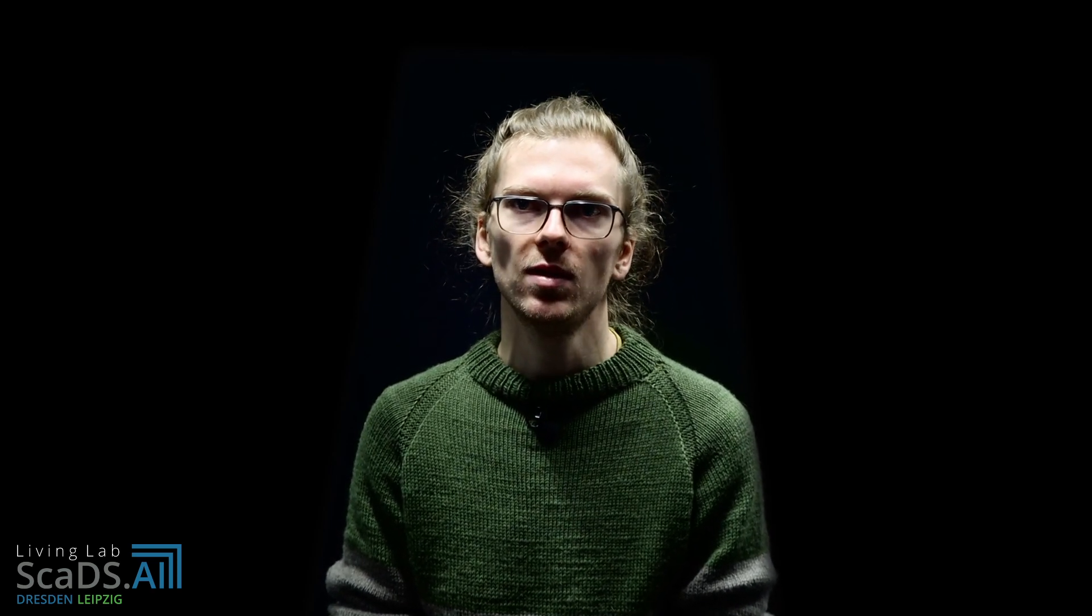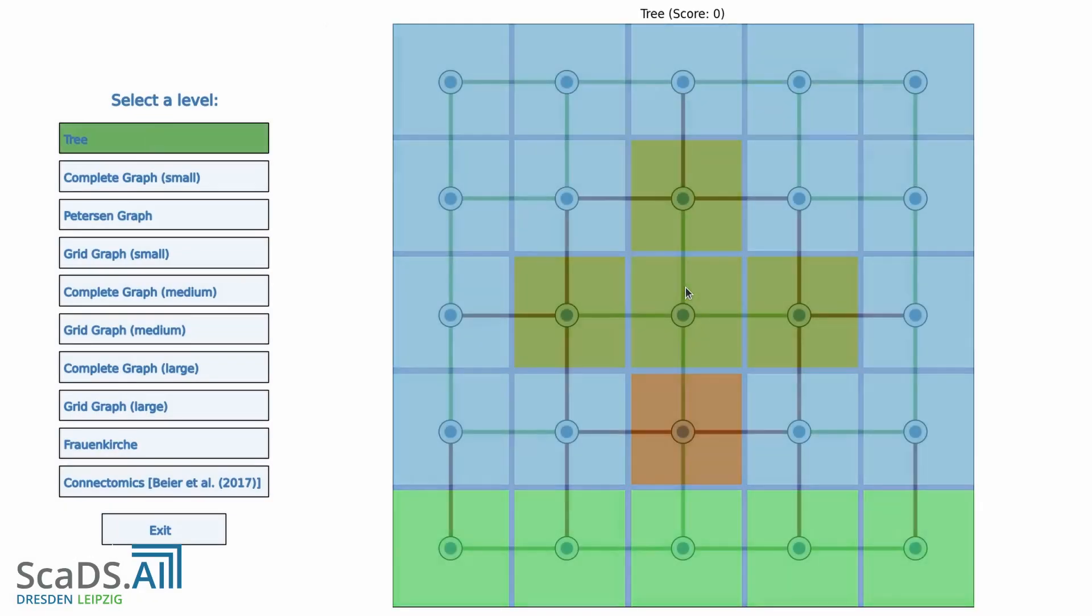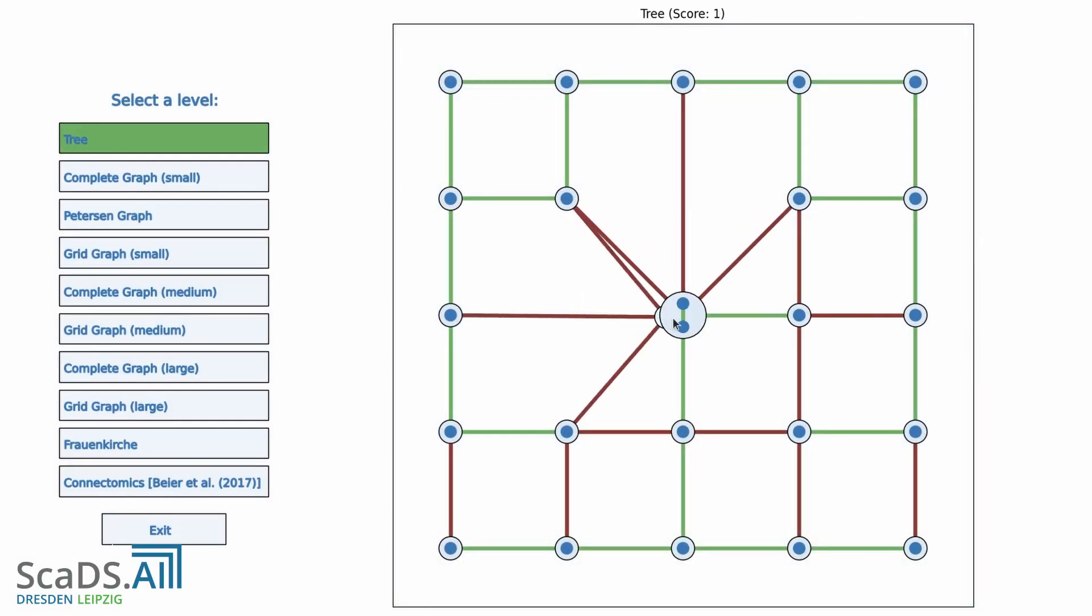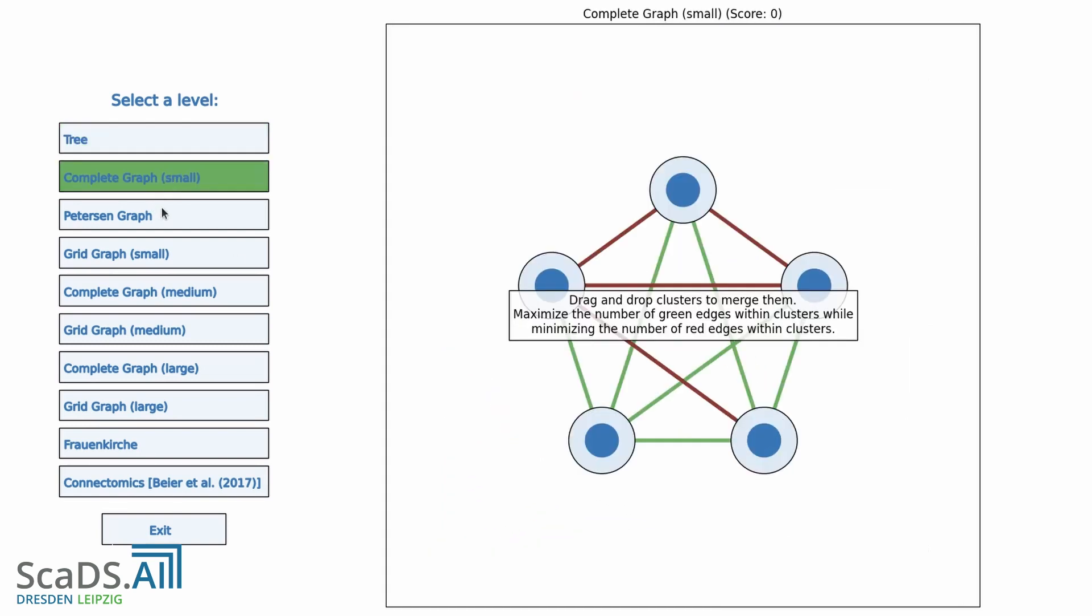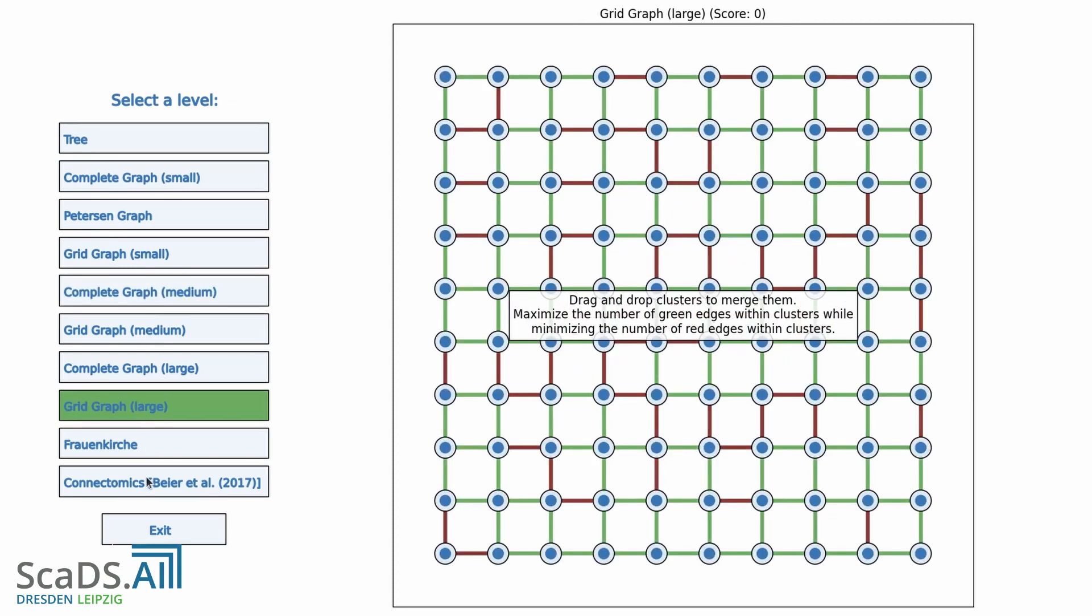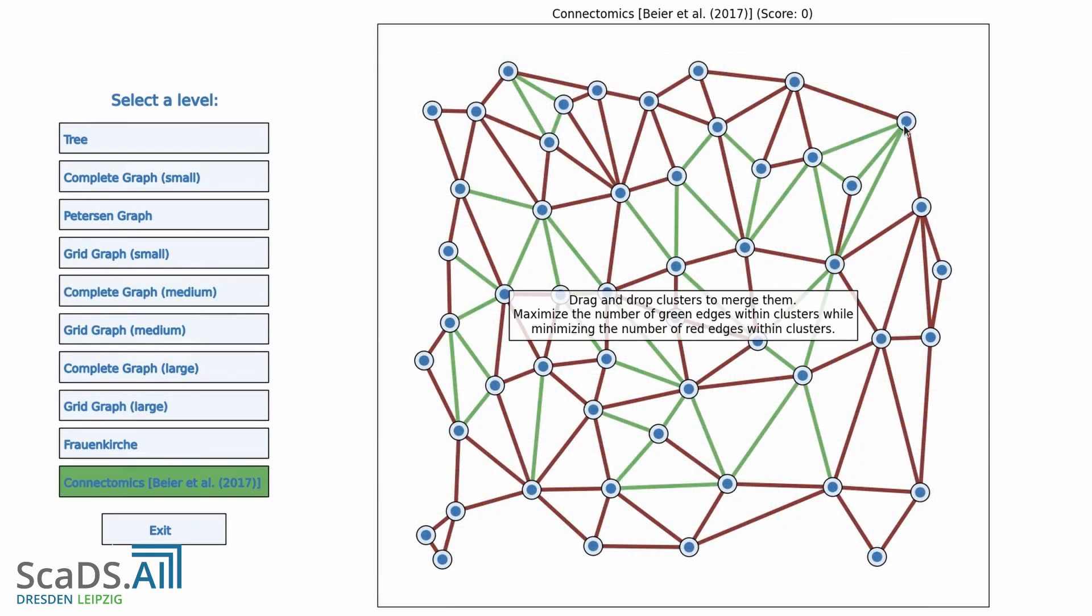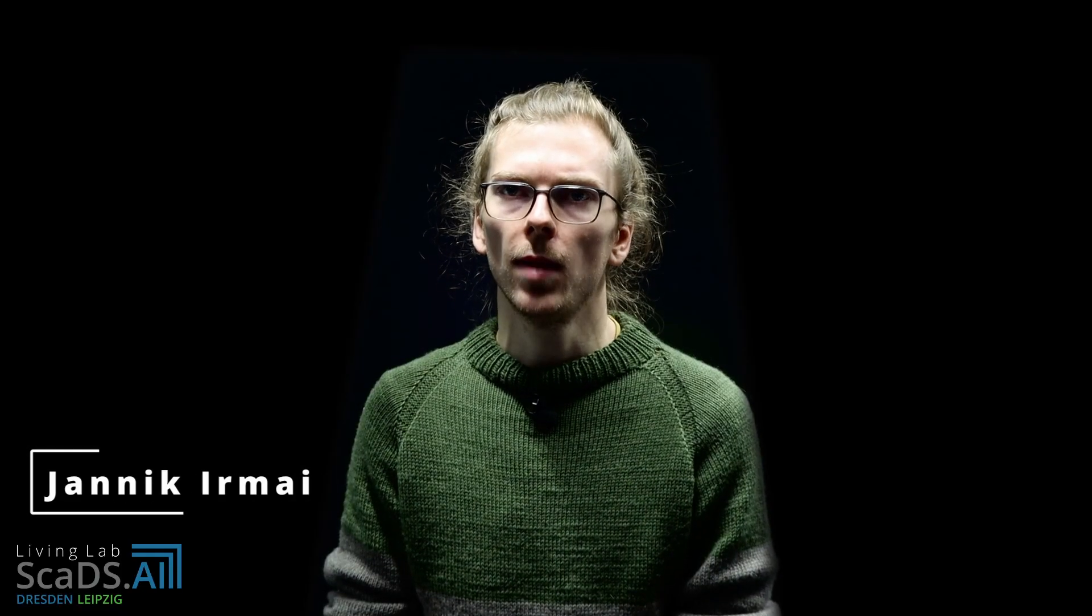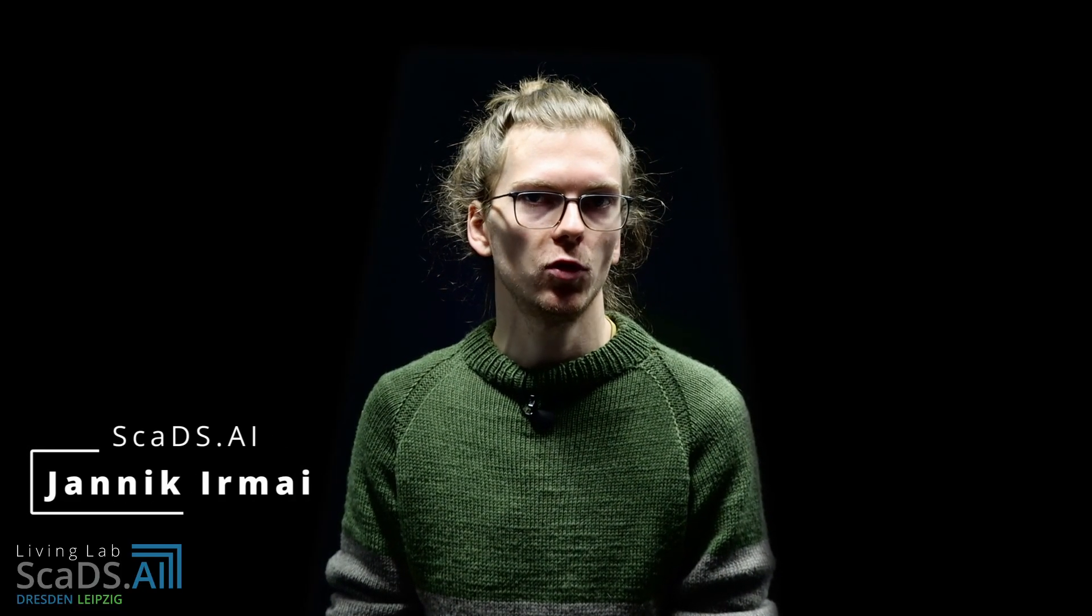Before I end today's lecture, I would like to advertise the SCATS AI Living Lab. The Living Lab is a collaborative environment of contemporary computer science research. You can visit the Living Lab in APB 1020 at the main campus of the TU Dresden. Besides many exciting demonstrators that you can experience in an interactive way, you can also play the multi-cut game. In this game, you are challenged to find the optimal solution to the multi-cut problem in different levels. Can you come up with a strategy that always yields the optimal solution?